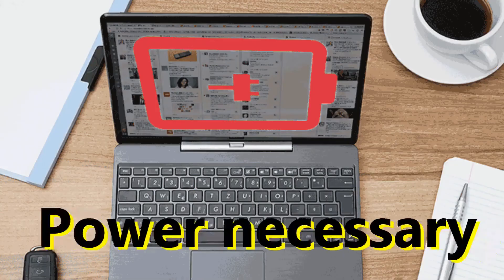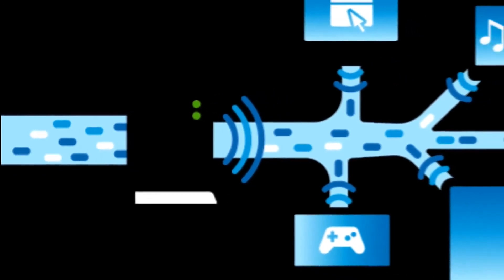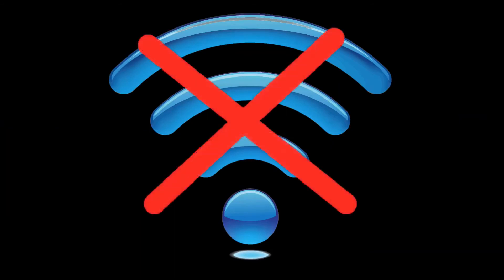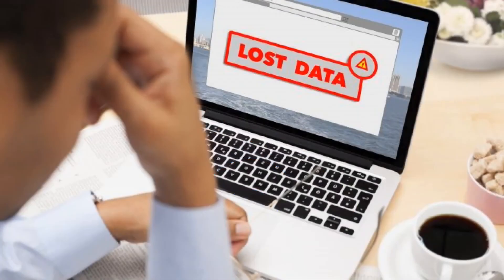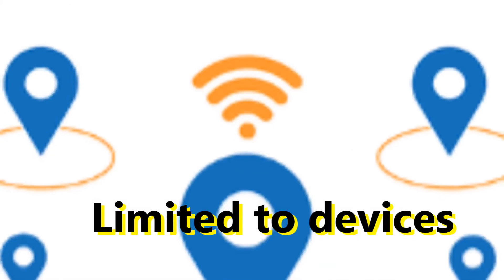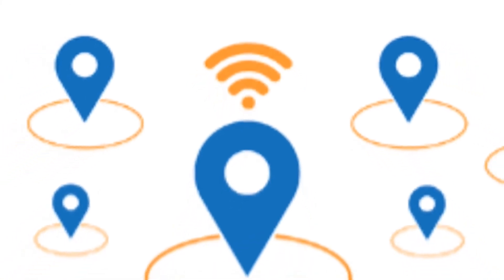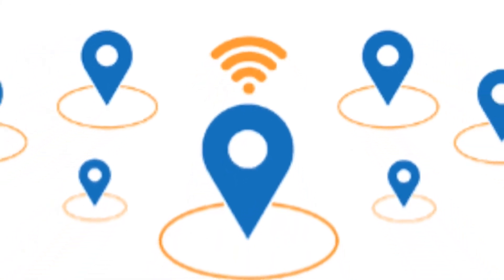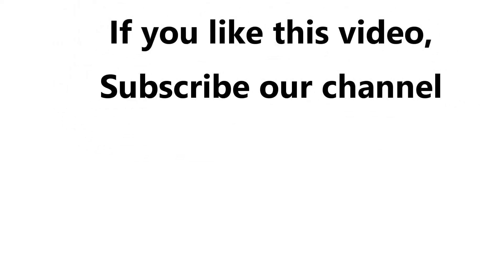Ninth is power is necessary. A power supply to the Wi-Fi is a must for using it. If the power supply is interrupted, then Wi-Fi gets switched off, which stops important work. Tenth is limited to devices. This technology is limited and not compatible with other cable-free connections such as GPRS, Bluetooth, UMTS, etc. If you like this video then subscribe to our channel, hellsite.com.